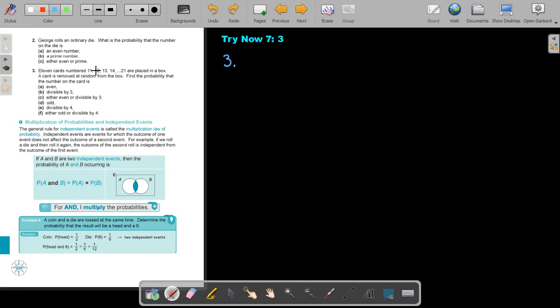11 cards, number 11, 12, 13, 14, up to 21, are placed in a box. A card is removed at random from the box. Find the probability that the number on the card is, and then they start. Again, let's do it like the previous one. We're just going to write down all the different numbers. So it's 11, 12, 13, 14, 15, 16, 17, 18, 19, 20, and 21.